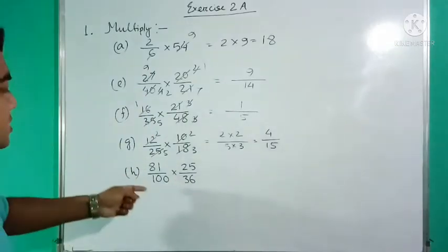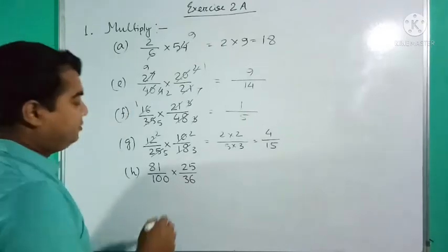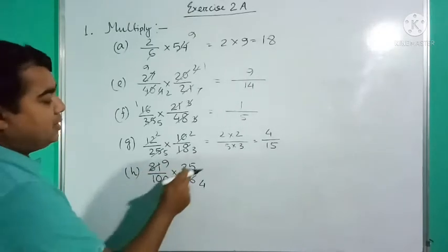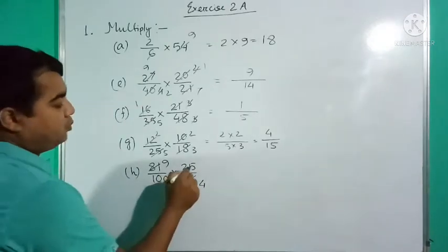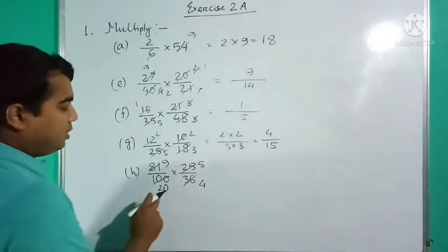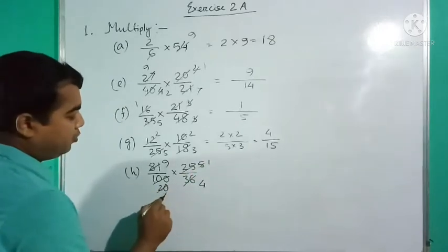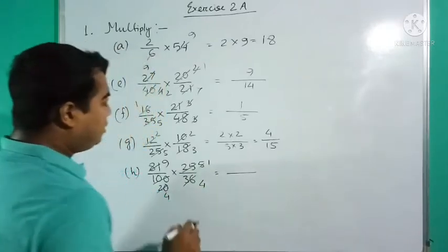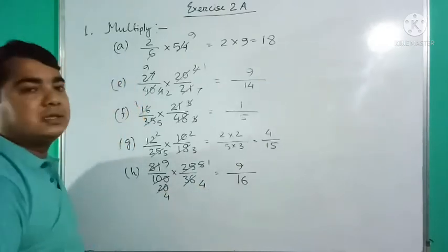Question number 1h: 81/36 × 25/100. Cancel 81 and 36 — both divisible by 9, giving 9 and 4. Cancel 25 and 100 — both divisible by 5, giving 5 and 20. Again 5 and 20 are divisible by 5, giving 1 and 4. No more cancellation. Multiply: numerator 9 × 1 = 9; denominator 4 × 4 = 16. Answer is 9/16.